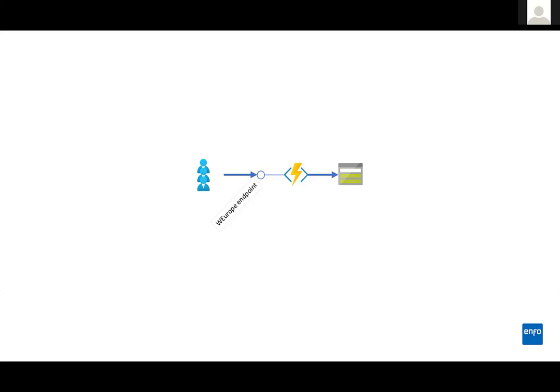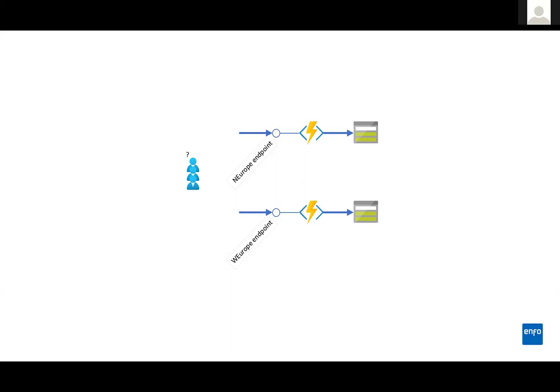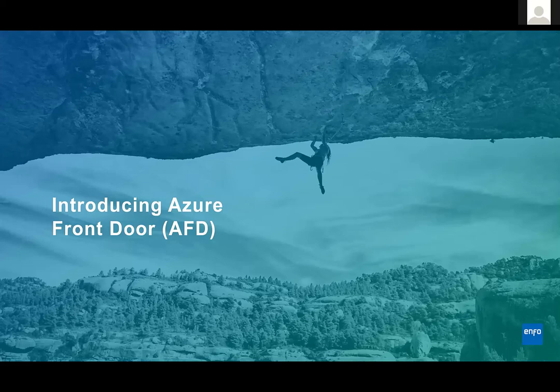You want to do this redundantly, so you duplicate it and have a North Europe endpoint that does the exact same thing — it gets the data from a storage-exposing function. But your users don't know which endpoint to call, which is the primary, which is the secondary, and in what cases should they switch back and forth between these two? They don't want to be bothered by those things. But there are, of course, ways of solving this.